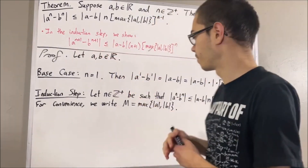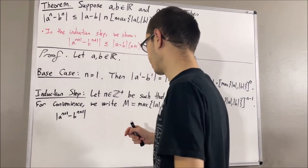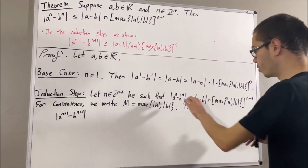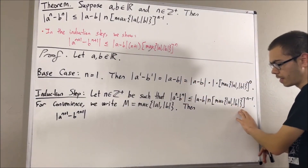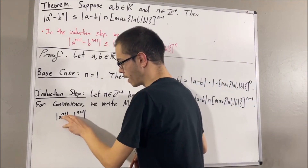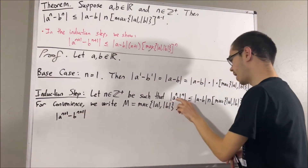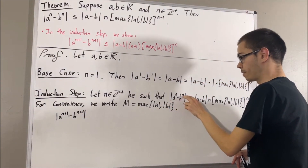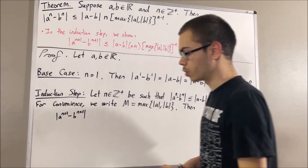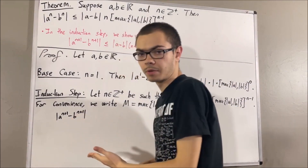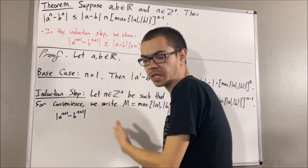Let's start out by writing the left-hand side. We want to somehow use our induction hypothesis. Currently we have a to the power of n plus 1 minus b to the power of n plus 1, but we want to somehow get a to the power of n minus b to the power of n into our work. To do that, we can add and subtract something — specifically, we're going to add and subtract a times b to the power of n.